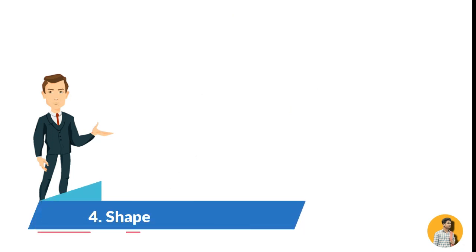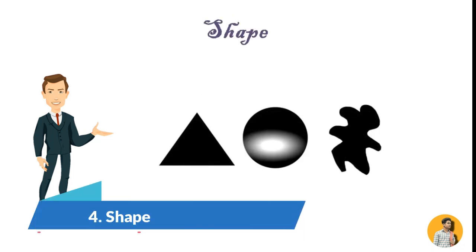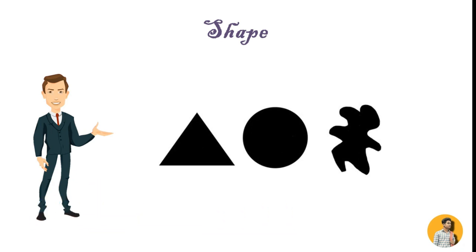Fourth is shape. A shape is a self-contained defined area like square, circle, free-form shape, or natural shape. A positive shape automatically creates a negative shape. The shape can be symmetrical or asymmetrical.